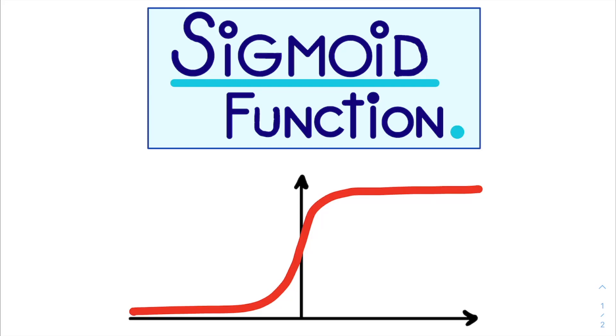The sigmoid function is a special one. It plays a crucial role in how neural networks learn and thereby driving the AI revolution.